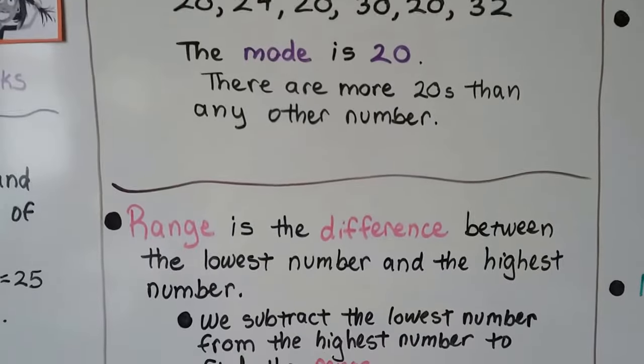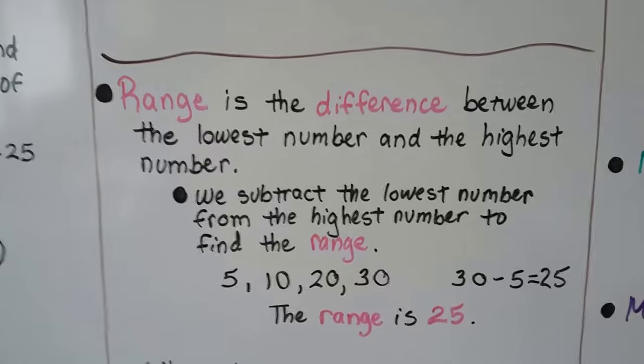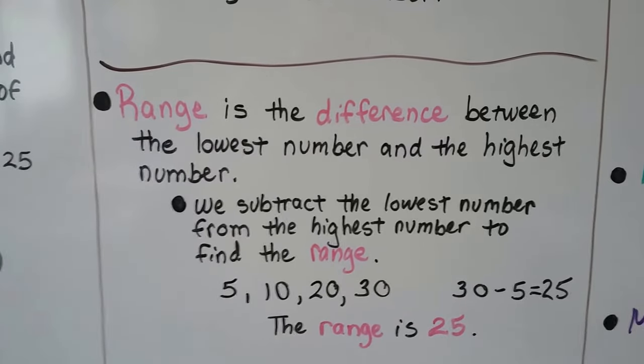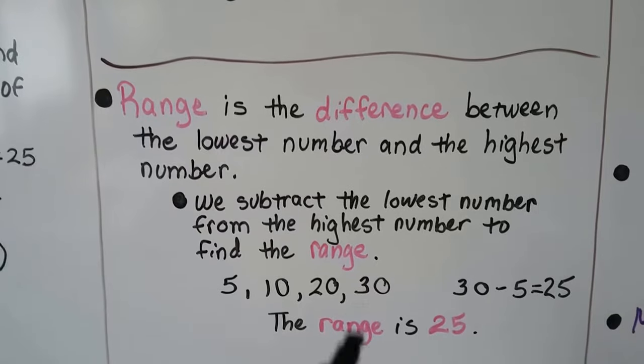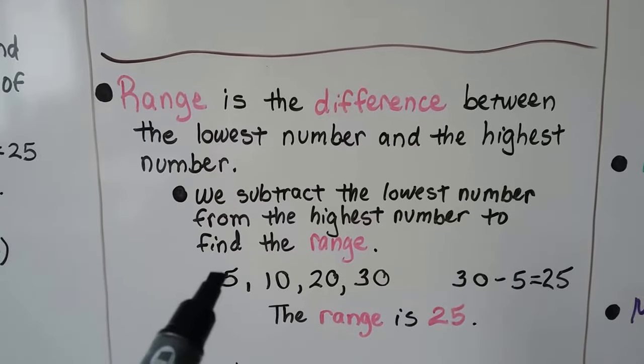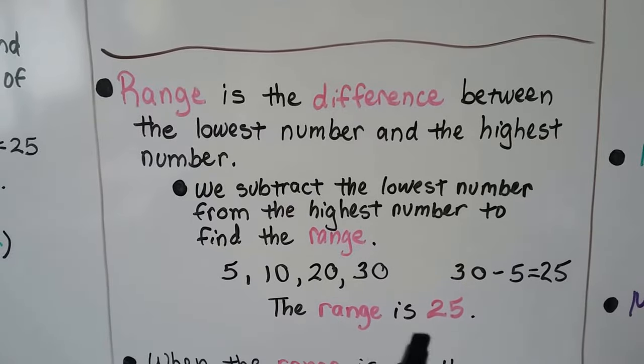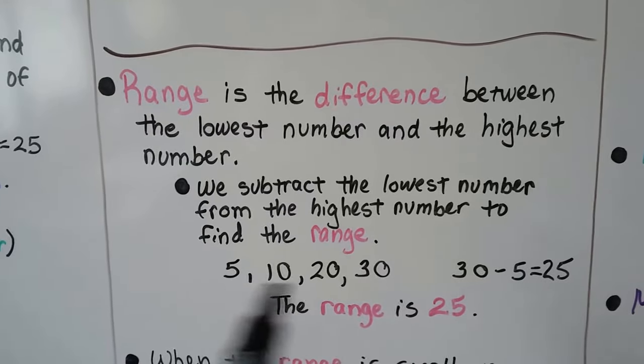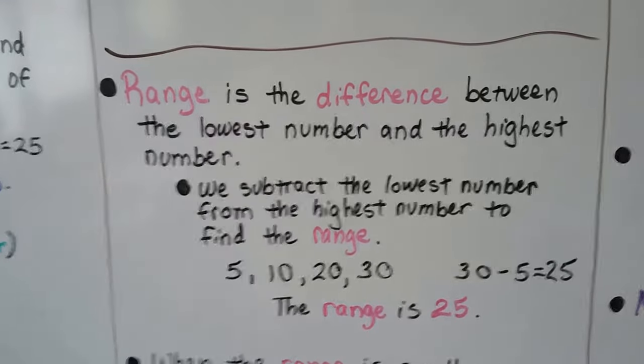The range is the difference between the lowest number and the highest number. We subtract the lowest number from the highest number to find the range. We have 5, 10, 20, and 30. We do 30, the highest number, minus 5, the lowest number. We get 25. So the range is 25. These numbers range between 5 and 30. That's a range of 25.